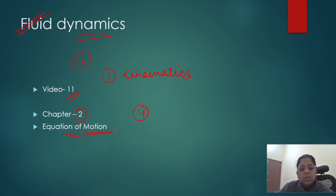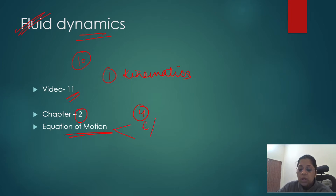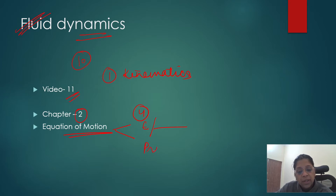Usually there are two questions from this chapter: one is Euler's equation of motion, and then Euler's dynamical equation, which comes with a pressure term.